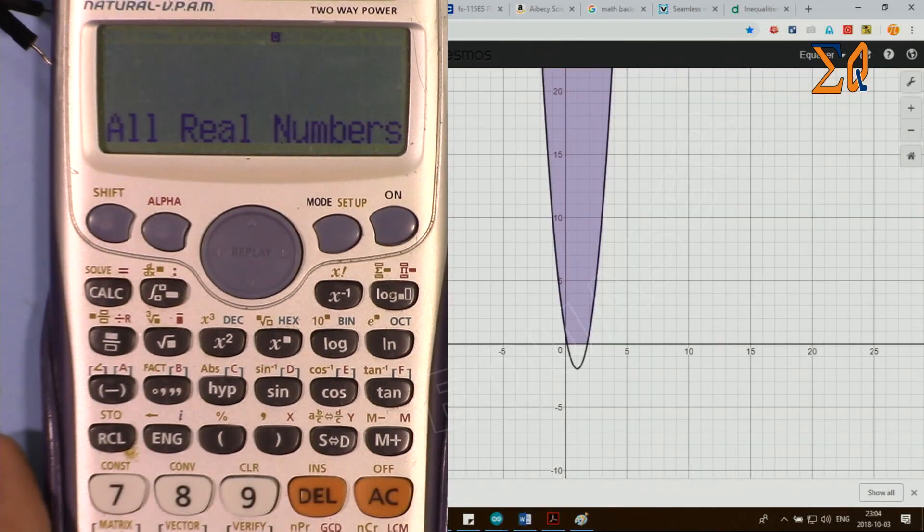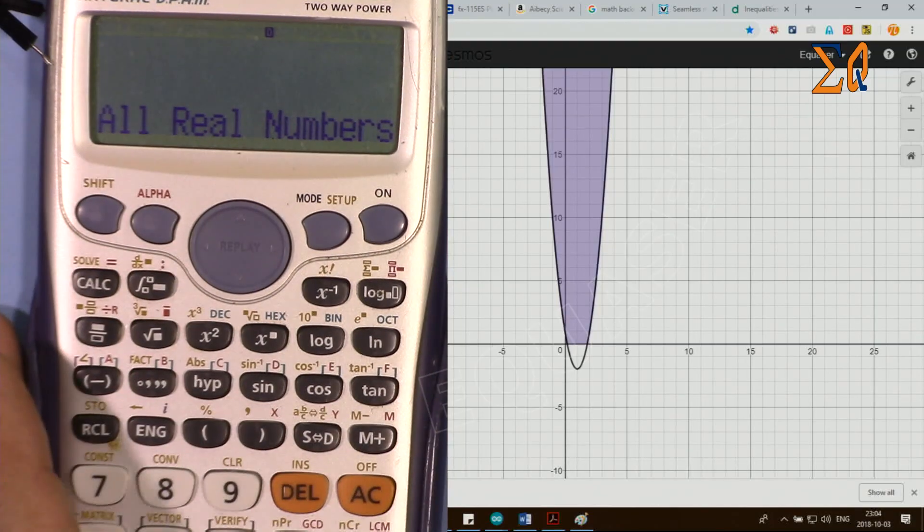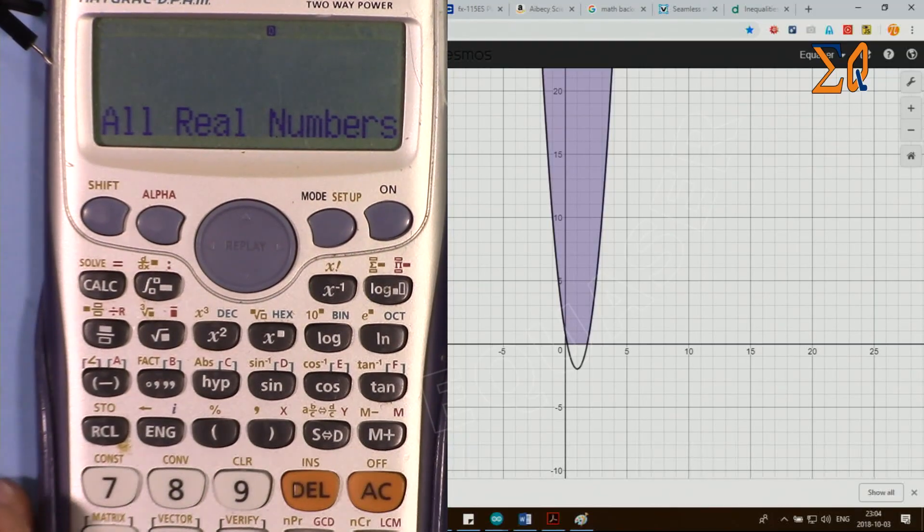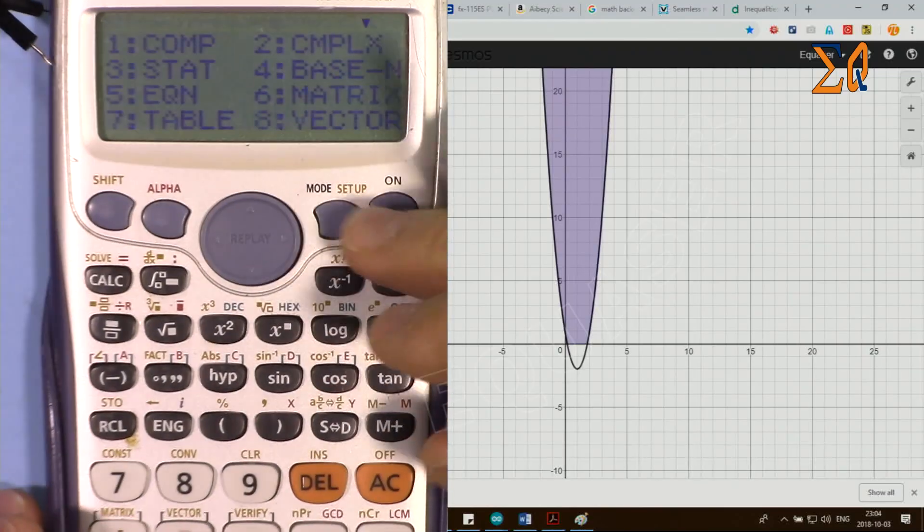Thank you for watching. This was how to use the Casio scientific calculator to do inequality calculations. Please thumb up the video and also subscribe to get updates of my upcoming videos.